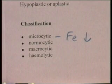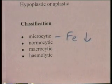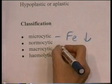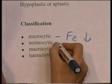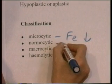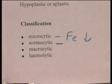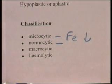If the blood cells are of normal size but there simply aren't enough of them, you get a normocytic anemia. The cells are of normal size, and this may occur, for example, in excess haemorrhage.